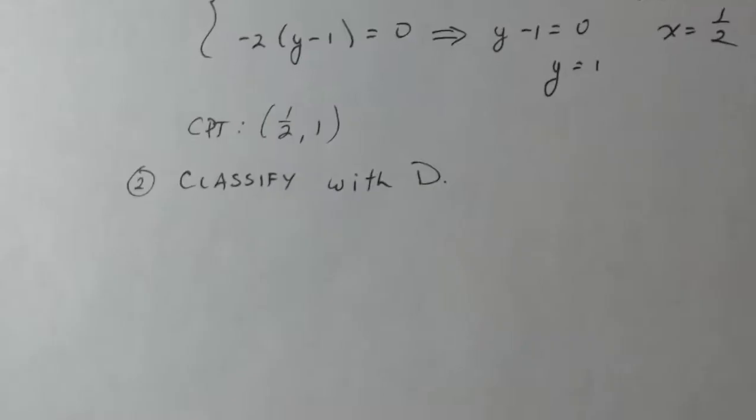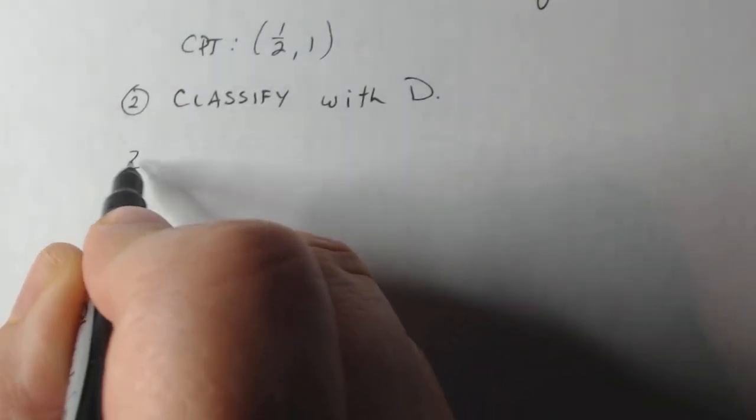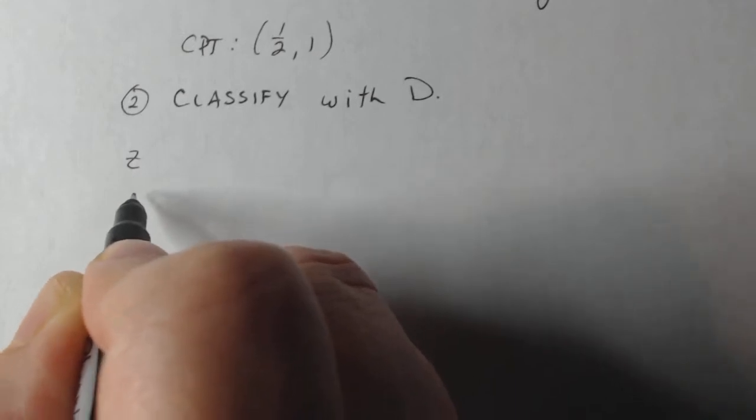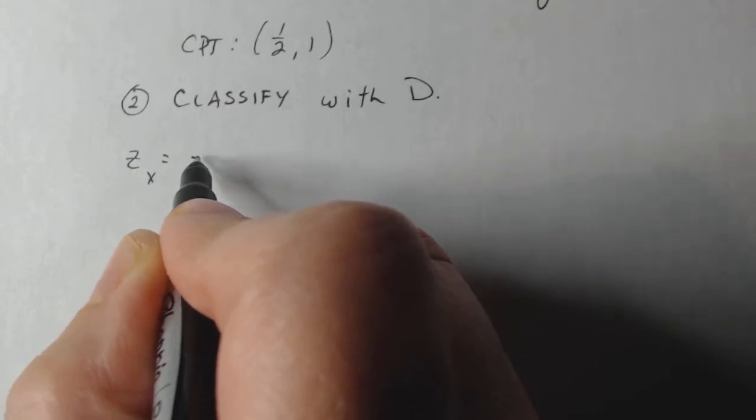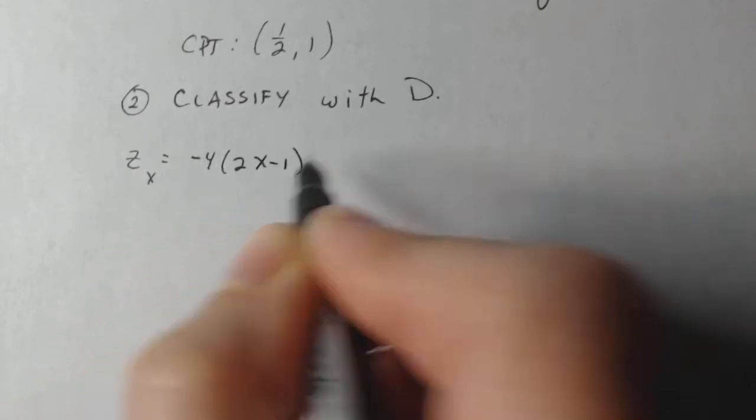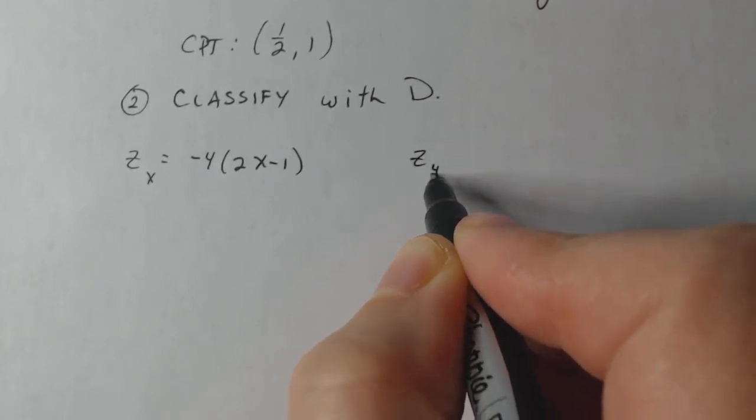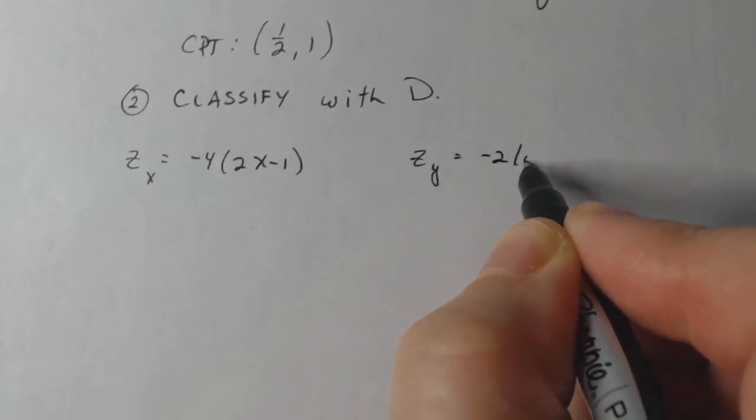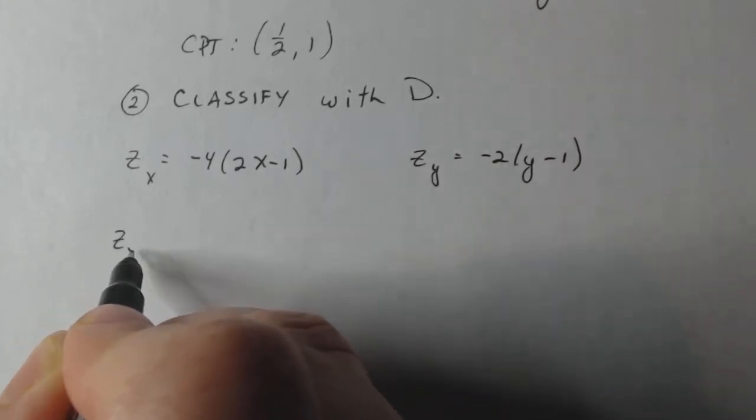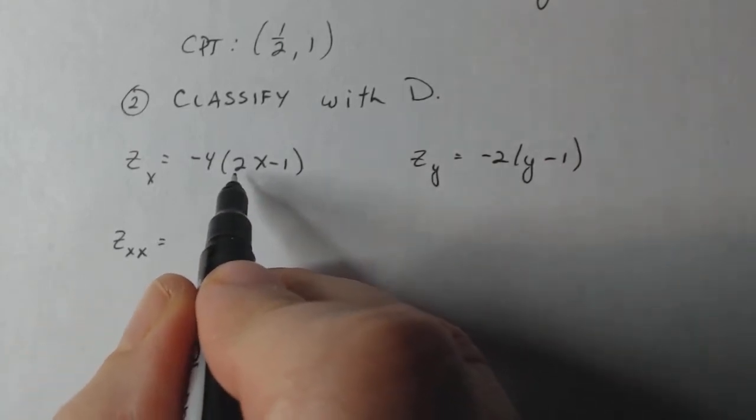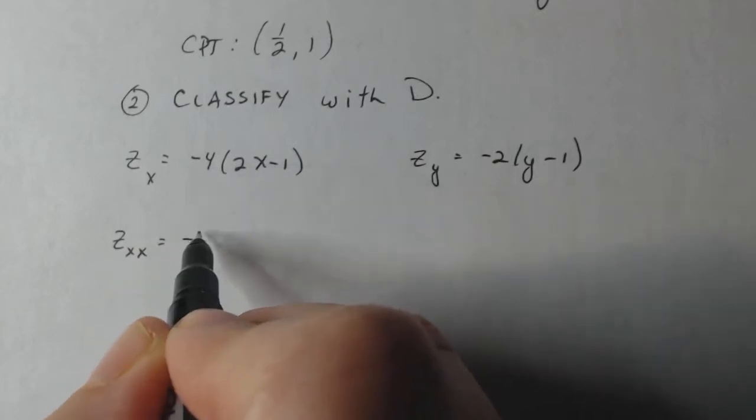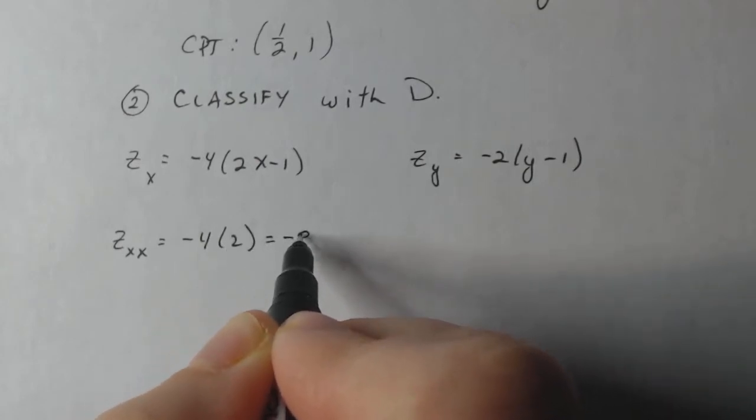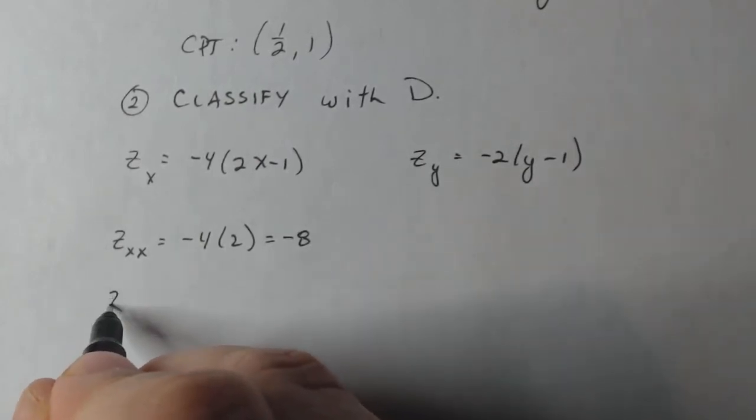So according to the discriminant, I need to find z sub xx, z sub yy, and z sub xy. Well, I'm gonna put these guys here first. So z sub x is minus four (2x - 1). Z sub y is minus two (y - 1). If I wanna find z sub xx, that's equal to, the derivative of this with respect to x is two, and then I have to multiply by minus four. So that'll be minus eight, just the constant.